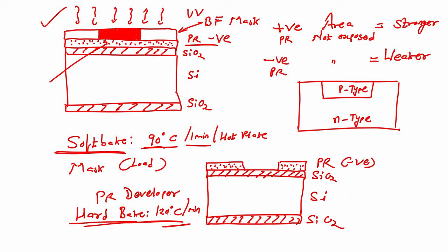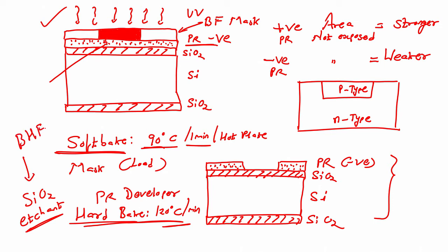After PR developing and hard bake we get this particular wafer. Now we have to dip this wafer in SiO₂ etchant — what is SiO₂ etchant? It is buffer hydrofluoric acid (BHF). When we dip this wafer in BHF, the SiO₂ which is not protected by my photoresist will get etched.